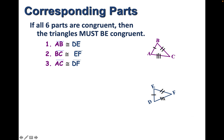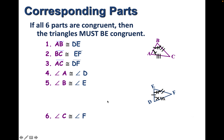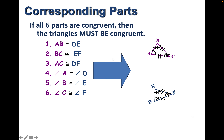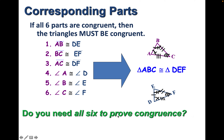Triangles have six parts: three sides and three angles. If two triangles are congruent, the angles are also congruent. Angle A is congruent to angle D, angle B is congruent to angle E, and angle C is congruent to angle F. We have different ways to mark these — one little line or three arcs to show they are the same. When you have congruent figures, all six parts will be congruent. The question is: do you really need to prove all six parts are the same to say two triangles are congruent, or are fewer possible?